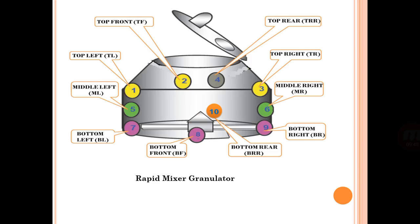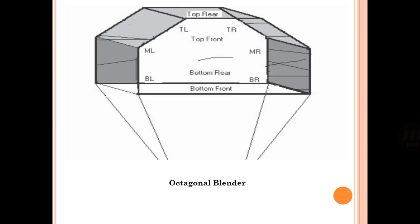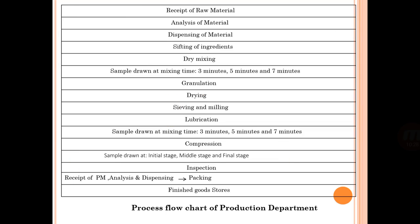The rapid mixture granulator (RMG) is mainly used for mixing. Its parts include top left, top front, top right, top rear (TRR), middle right, bottom right, bottom rear, bottom front, and middle left positions. Other key equipment includes the fluid bed processor and octagonal blender.